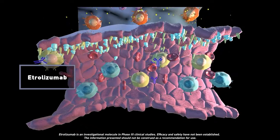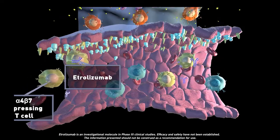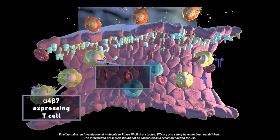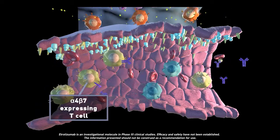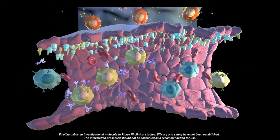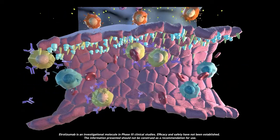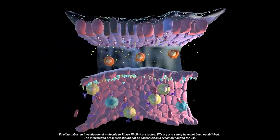Etrelizumab, with its investigational dual mechanism, is hypothesized to bind to the alpha-4-beta-7 receptor expressed on traveling immune cells and prevent their binding and migration into the lamina propria via MADCAM1.